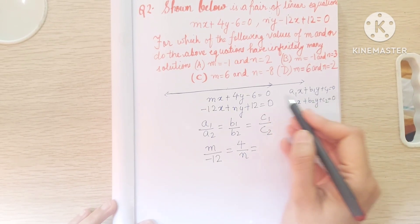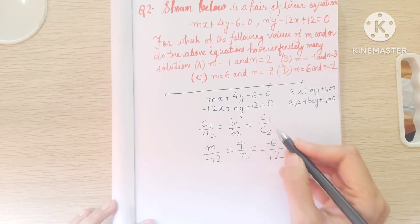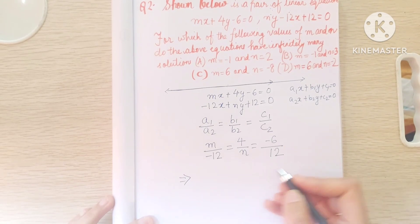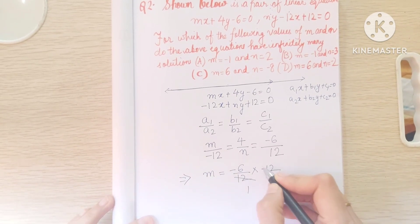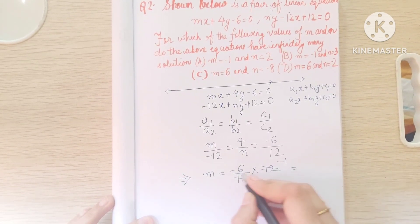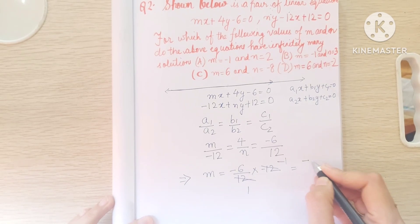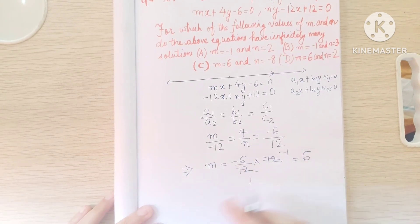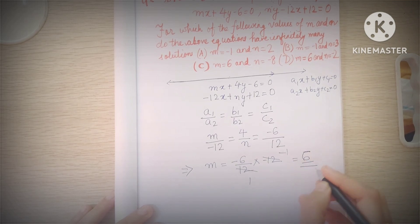So using the standard form a1x plus b1y plus c1 equals 0, and a2x plus b2y plus c2 equals 0, we identify c1 as minus 6 and c2 as 12. Solving for m: m by minus 12 equals minus 6 by 12, so m equals minus 6 divided by 12, multiplied by minus 12. That gives m equals 6.